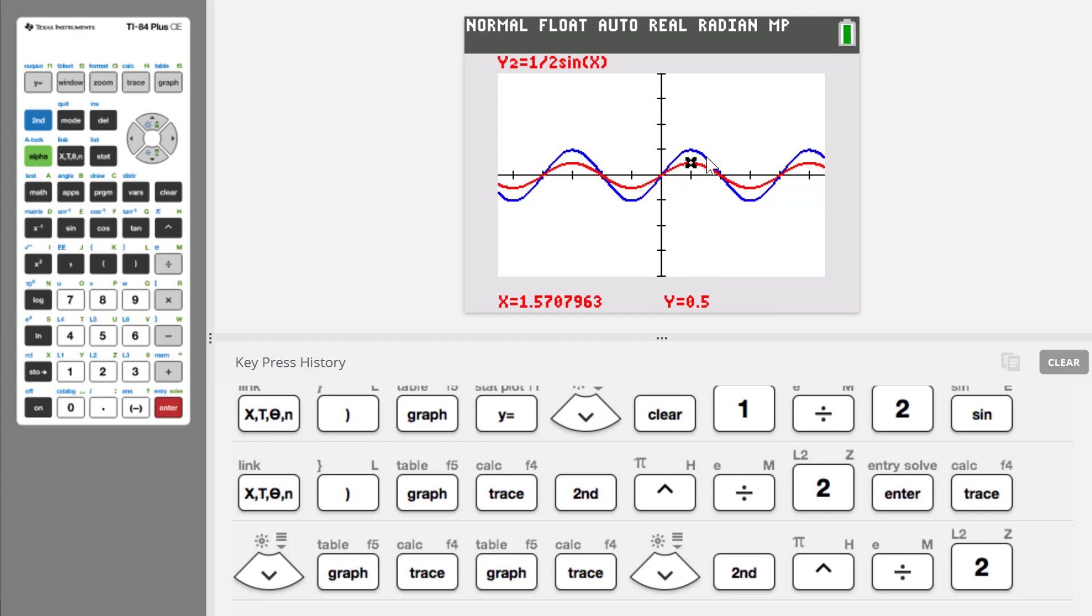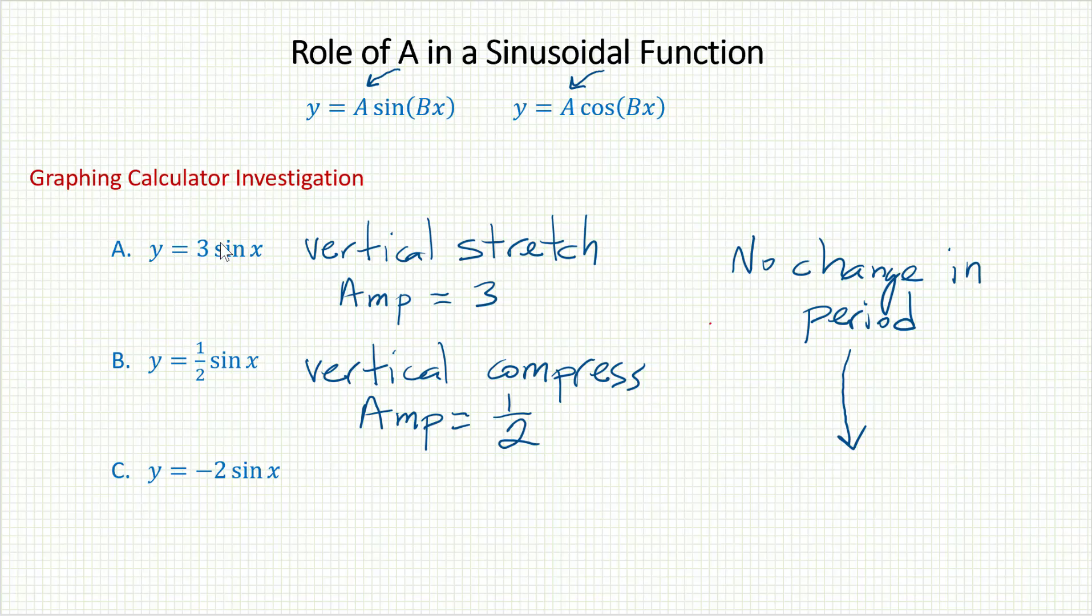Has the period changed? No. Once again, the period has remained the same at 2 pi. So it looks like a values larger than 1 lead to a stretch, and a values less than 1 lead to a compress.